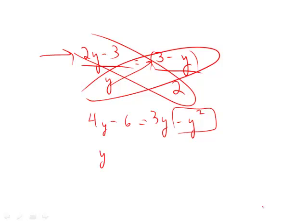So bring that y squared to the other side. Bring the minus 3y to the other side. 4y minus 3y gives me plus y. Minus 6 is still hanging out there.